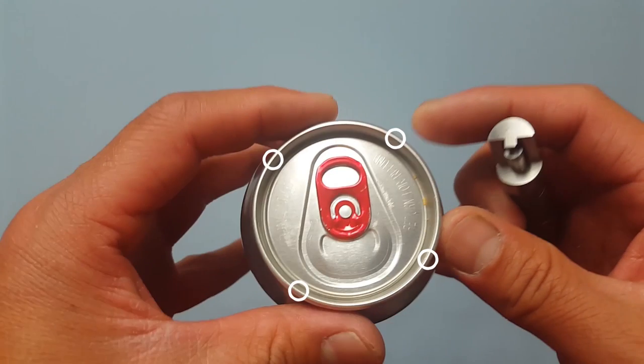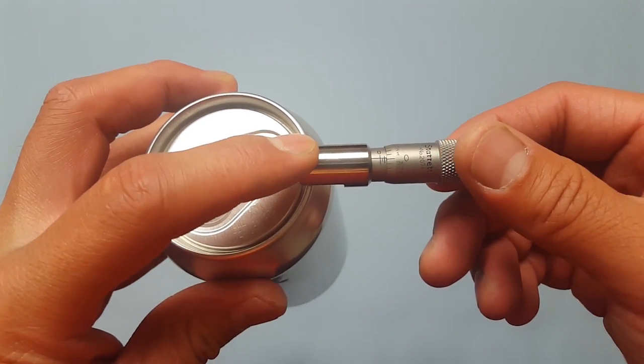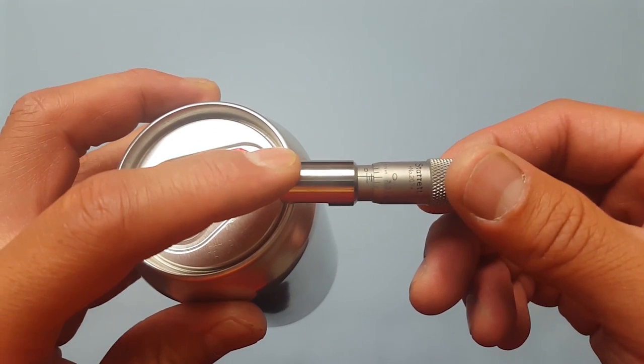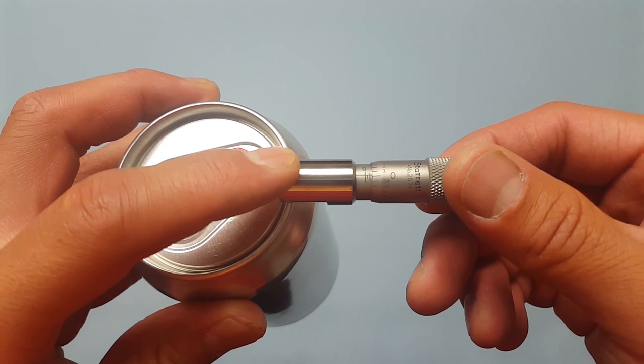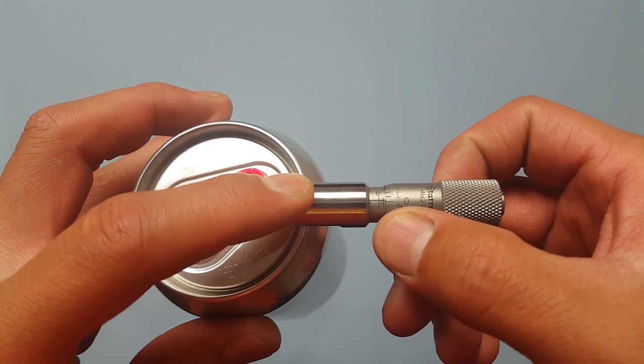Be sure to measure the can in four separate locations. My first location I am reading 75 thousandths. As you can see there are three ticks showing which indicates 75 thou.